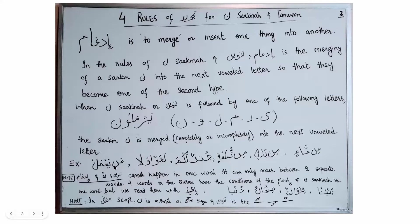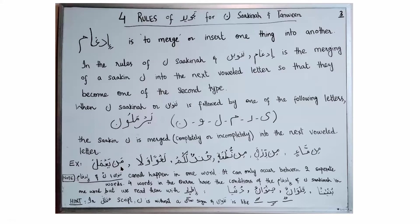In the next example, Noon Sakina is followed by letter Ya, one of the Yermalun letters. We merge letter Noon with Ya and hold the Gunna: Min-ya-amal. We do not say Min-ya-amal separately, because that would be giving letter Noon clearly with Idhar, not merging. You must merge letter Noon into Ya, hold the Gunna, and recite: Min-ya-amal.